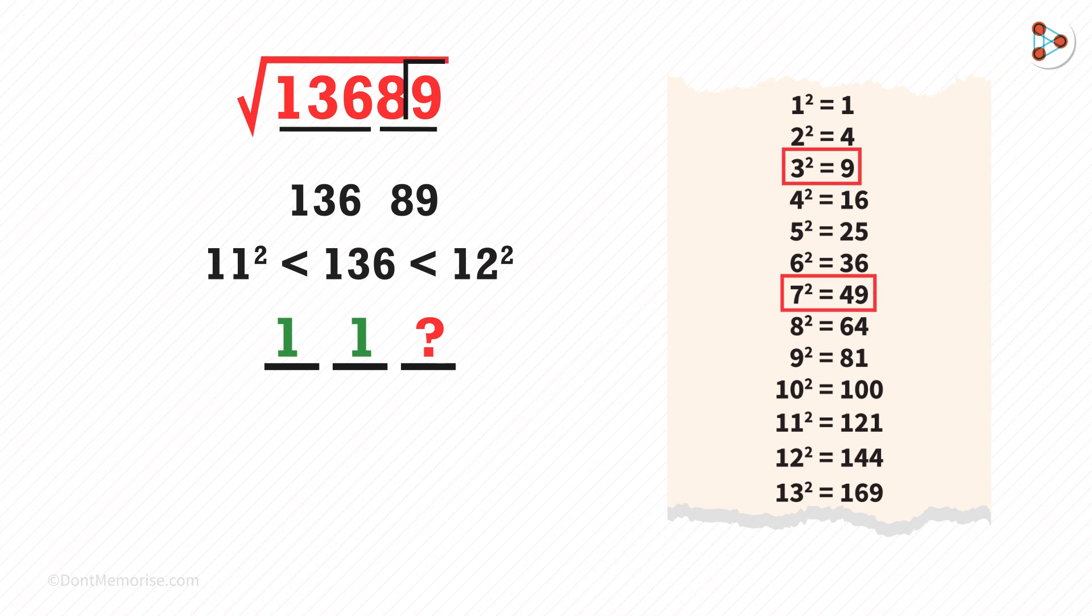That is why we need to multiply the lower number with its successor. So 11 multiplied by 12 gives us 132. Now we need to compare 136 to this number. Because 136 is greater than 132, we will take the greater of these two numbers, which is 7.